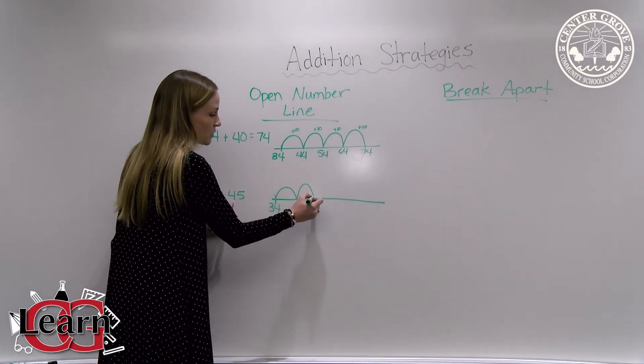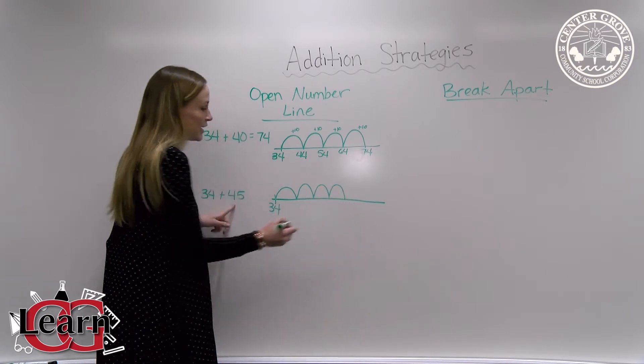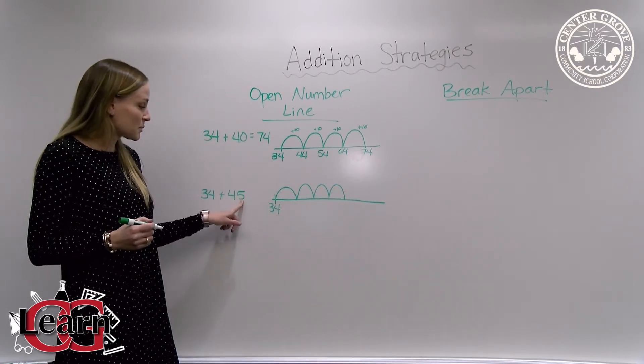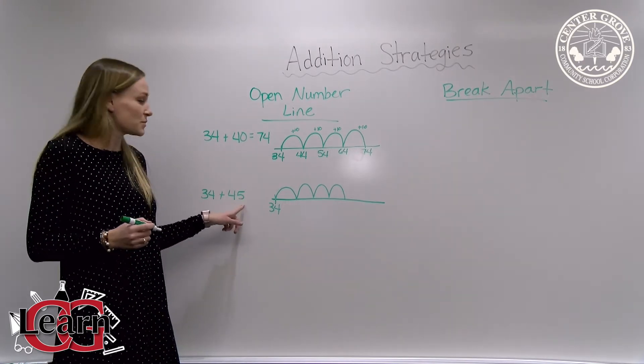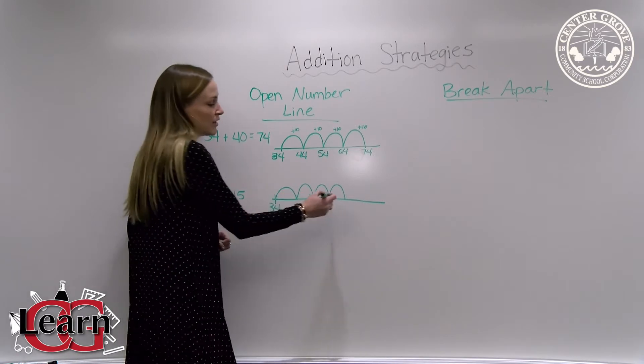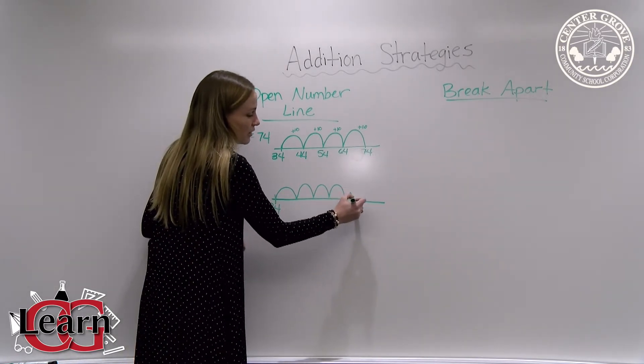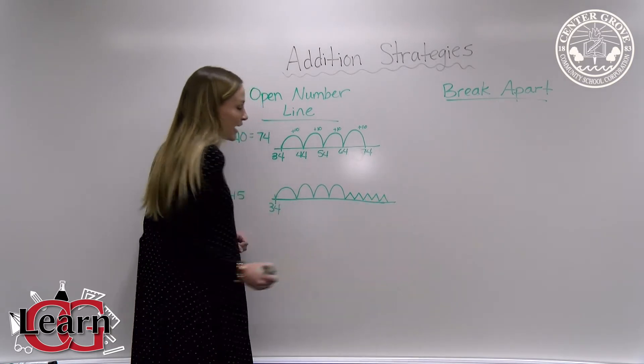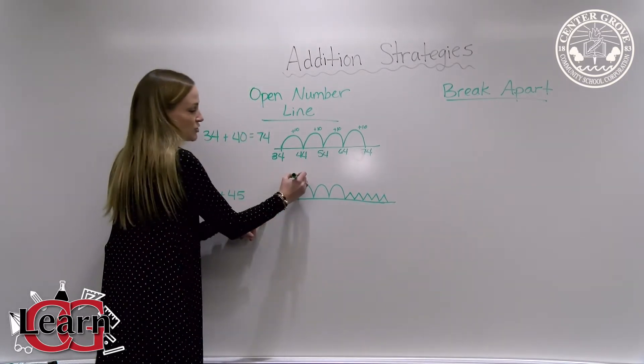So 10, 20, 30, 40, but now we need to do ones jumps. Since there's a five in the ones place, I'm going to do five ones jumps. I like to make mine look a little bit different so I don't get confused. I'm going to make these more pointy and jump one, two, three, four, five. I'll count on the same way with my tens jumps.